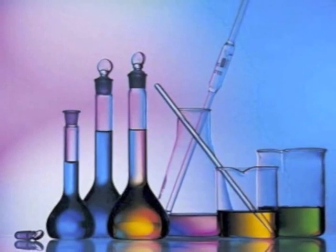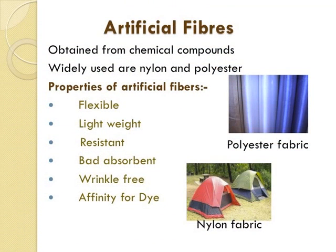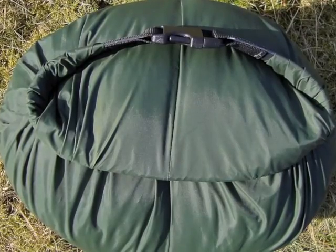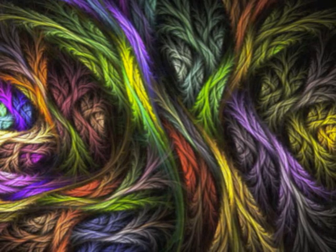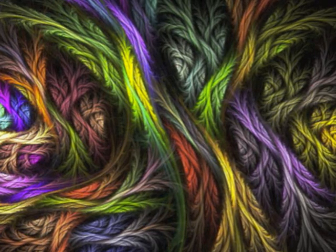Artificial fibers. They are obtained from chemical compounds. Widely used are nylon and polyester. Properties of artificial fibers: they are flexible, lightweight, resistant, and extremely bad at absorbing sweat, so we feel extremely hot if we wear them in summers. However, they are wrinkle-free and have affinity for dyes, but not natural dyes. One reason why people use artificial fibers is that they are produced chemically and the cost is extremely low compared to natural fibers, which are procured from natural sources. So obviously there is a trade-off.